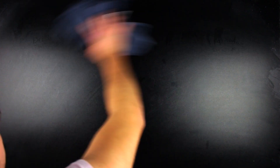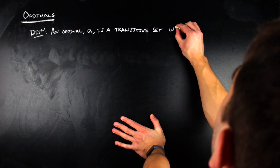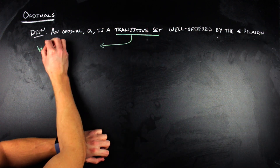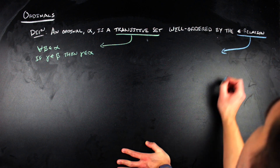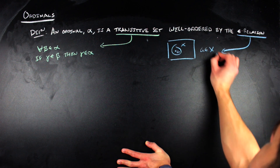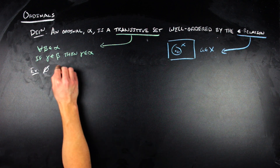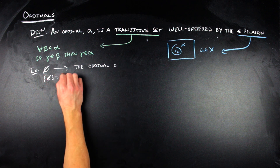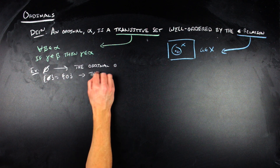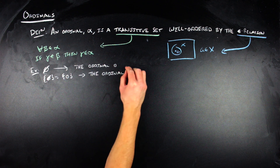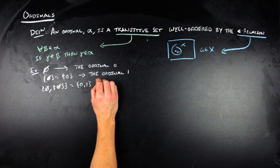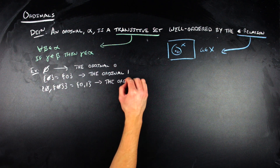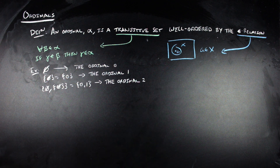So, what is an ordinal? According to the von Neumann definition, an ordinal is a transitive set that is well-ordered by the epsilon relation. Transitivity means that for every element of the set, elements of that element are also in the set. The epsilon relation is the membership relation used when talking about elements in a set. The empty set is the ordinal 0, and it's trivially transitive. The ordinal 1 is the set containing the empty set — also trivially transitive. The ordinal 2 is the set containing both 0 and 1, and 2 is transitive because every element of 1, namely the empty set, is also an element of 2.